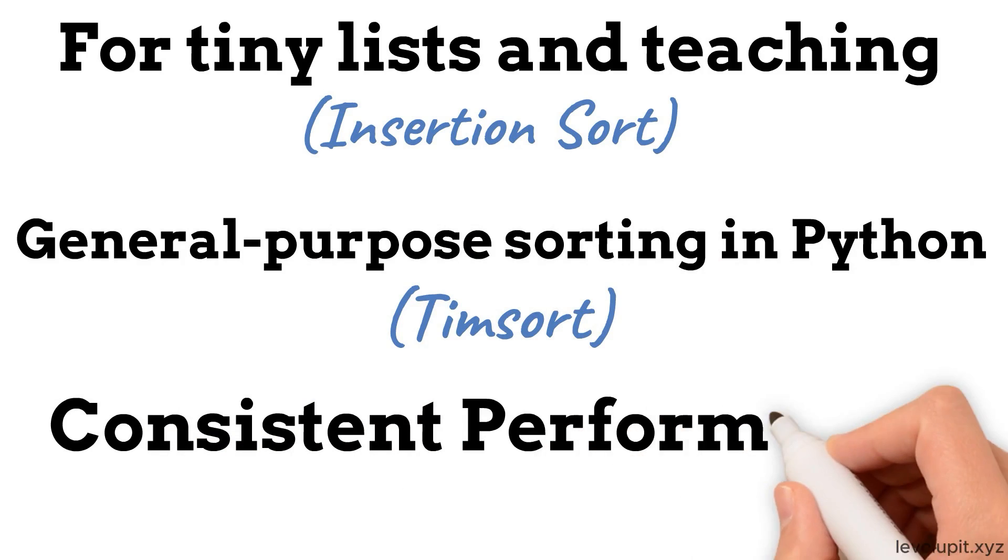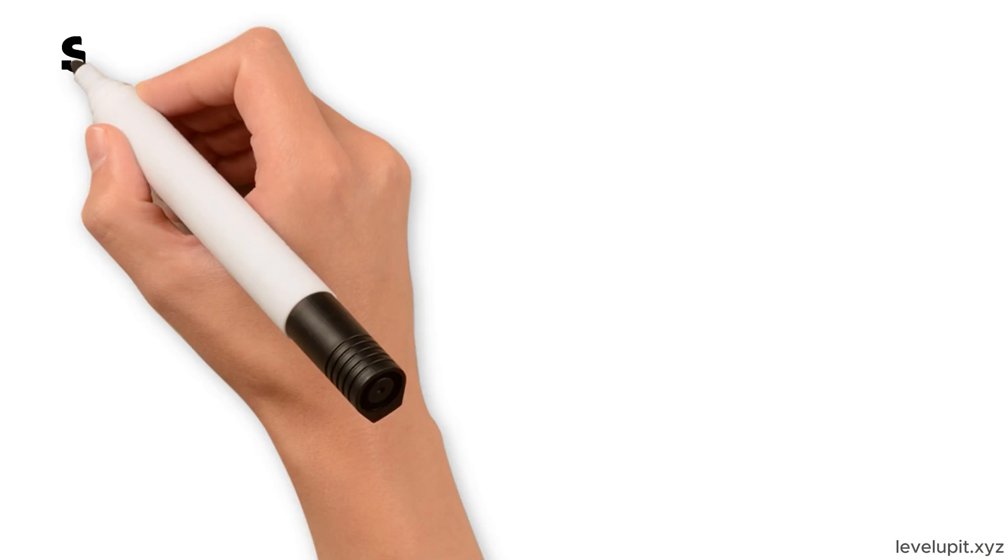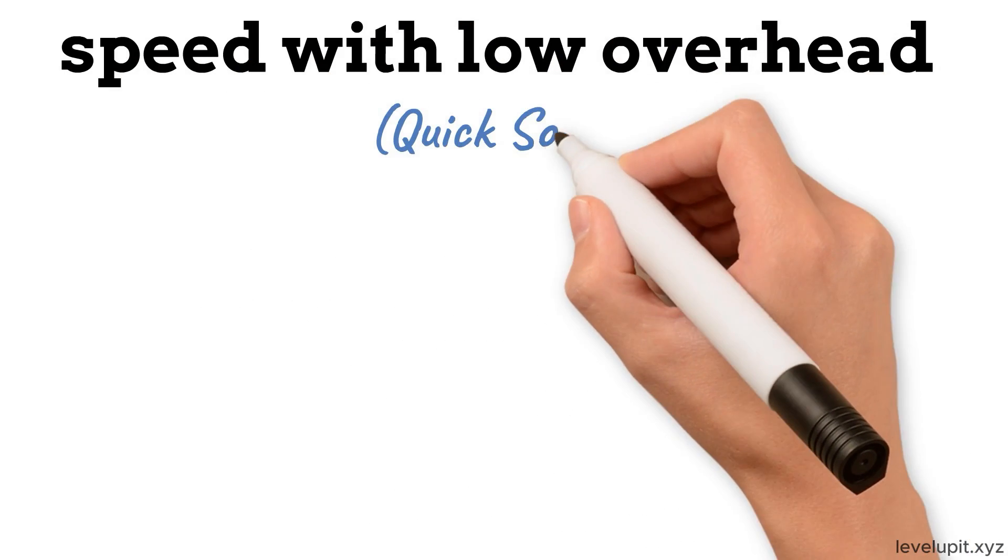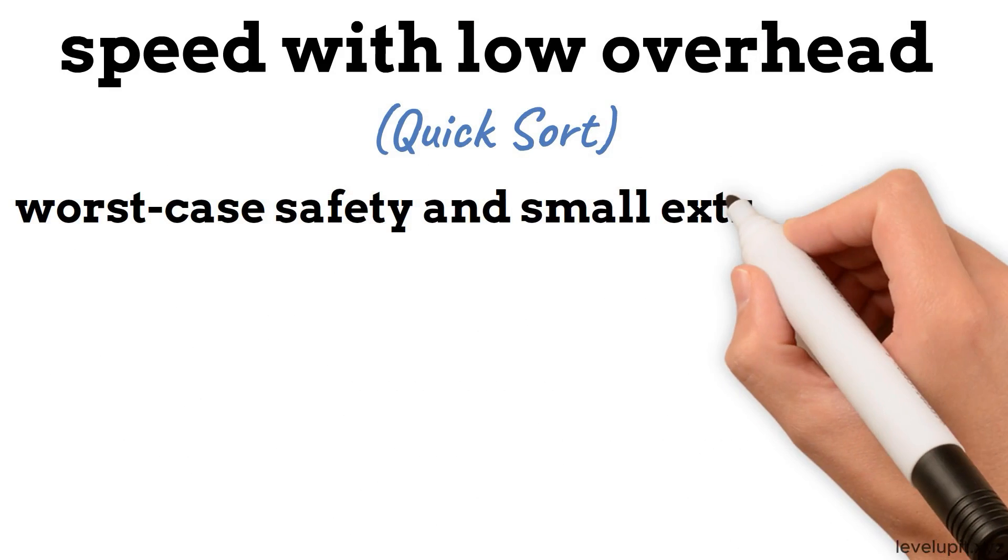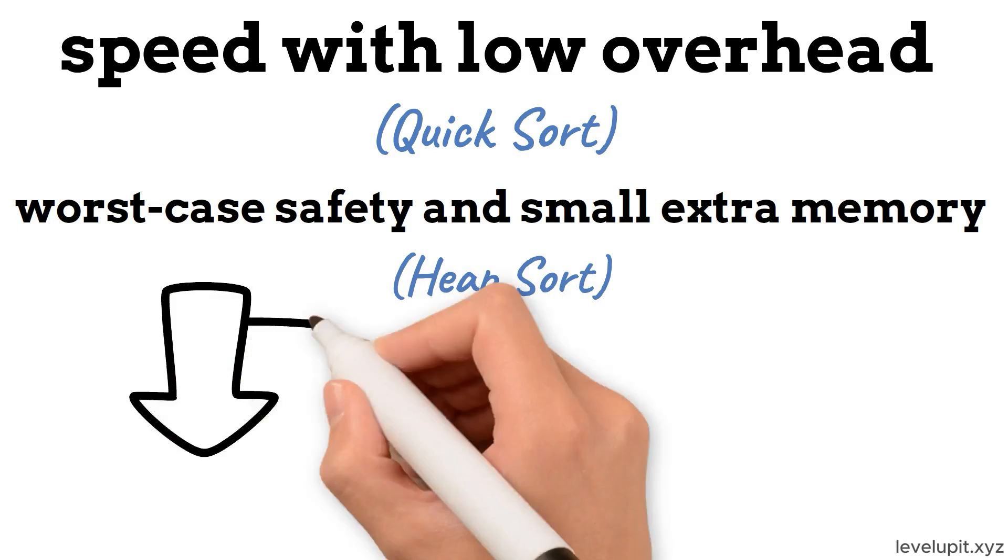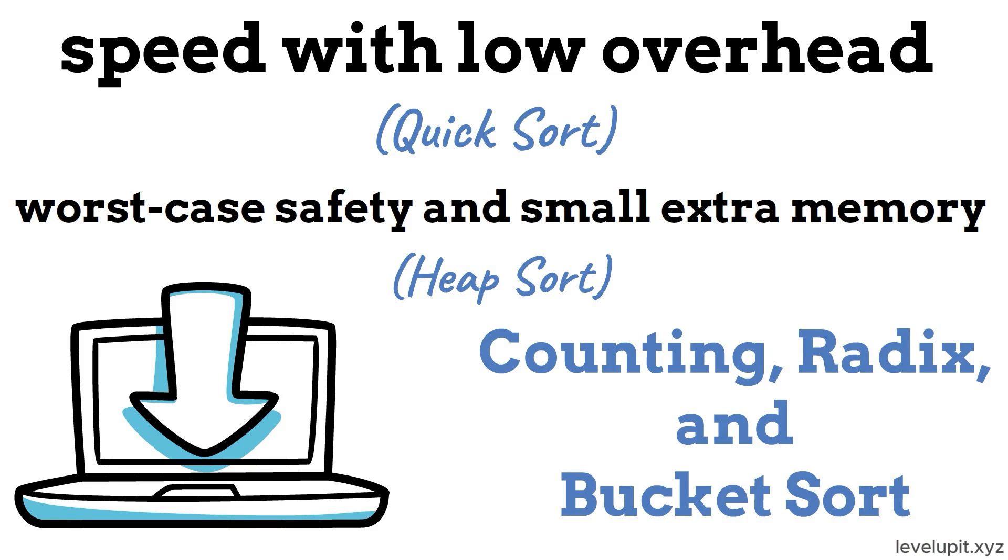When you need consistent performance and can spare memory, MergeSort's steady merging is reliable. When you want speed with low overhead and you can manage pivots well, Quicksort shines. When worst-case safety and small extra memory matter, Heapsort is a solid friend. And when inputs meet special conditions—bounded integers, fixed-length numbers, or nicely uniform distributions—counting, radix, and bucket sort unlock another level of speed.